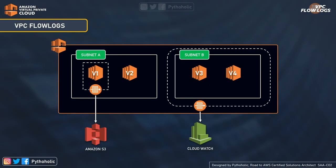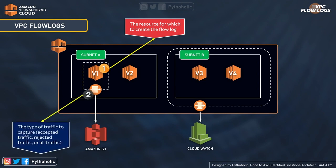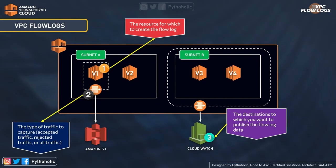To publish logs, keep three steps in mind: first, the resource for which to create the flow log — your instance, subnet, or VPC; second, the type of traffic to capture — accepted traffic, rejected traffic, or all traffic; third, the destination to publish the flow log data, either stored as a file in S3 or in a CloudWatch log stream. In the visual, subnet A has VPC flow logs enabled for a specific network interface and publishes logs only for that, while on the right-hand side, VPC flow logs are enabled for the whole subnet, covering all instances V3 and V4 and the network interfaces within that subnet.